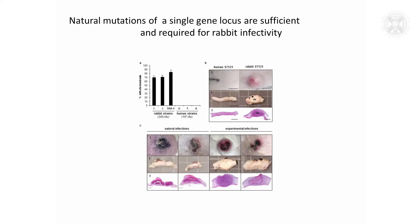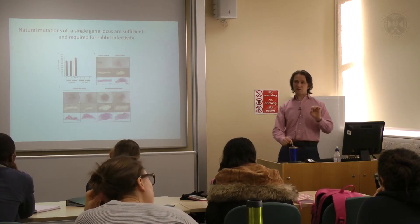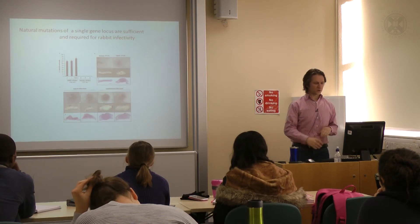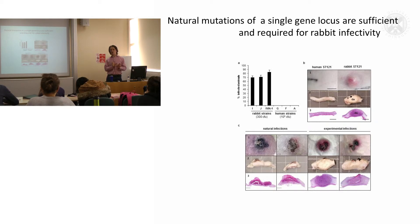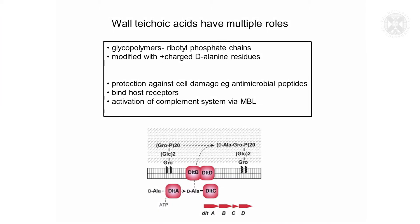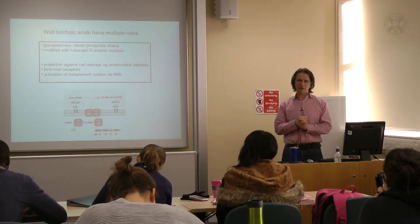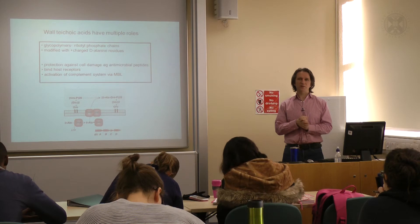We took a rabbit strain of ST121 and a human strain of ST121 and experimentally infected rabbits, establishing skin infections very similar to the natural type caused by these rabbit strains. We can see that only the rabbit strains can actually cause infections experimentally — the human strains cannot. There is very clearly an adaptation which allows these rabbit strains to infect rabbits, and what we've worked out is that a single nucleotide mutation in one gene, which changed the derived amino acid sequence of the encoded protein, was sufficient and required to allow ST121 to infect rabbits.